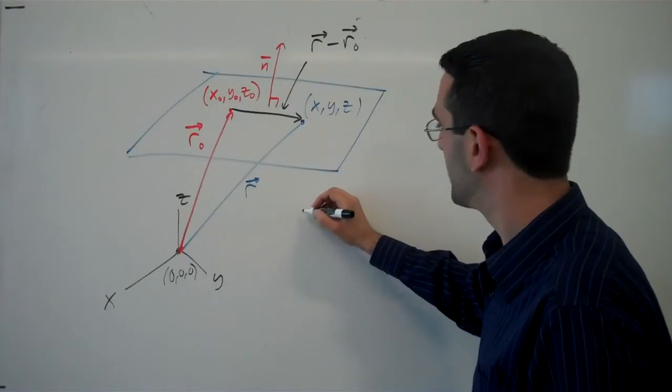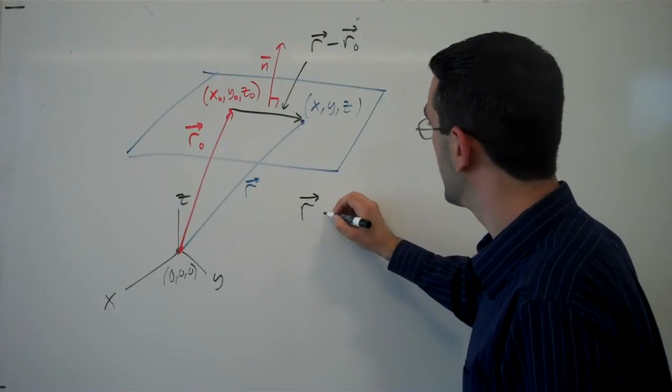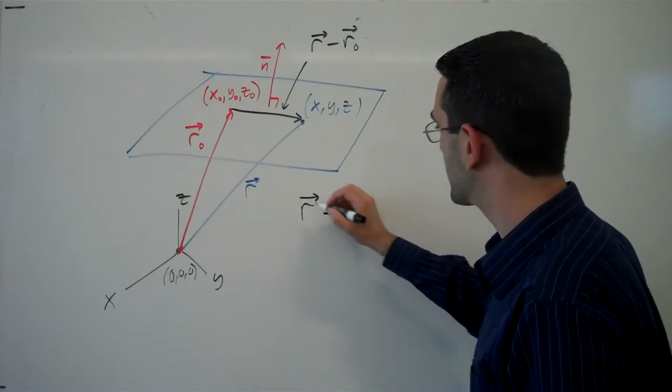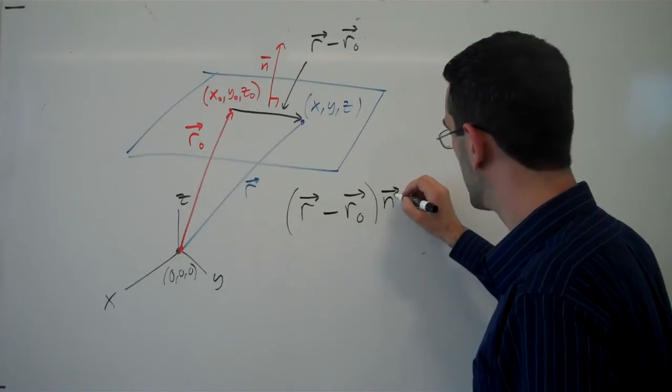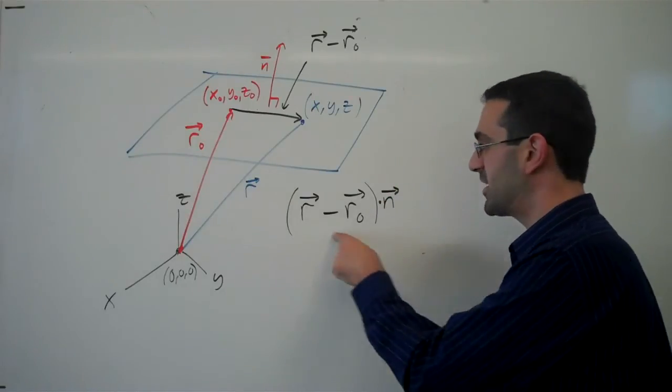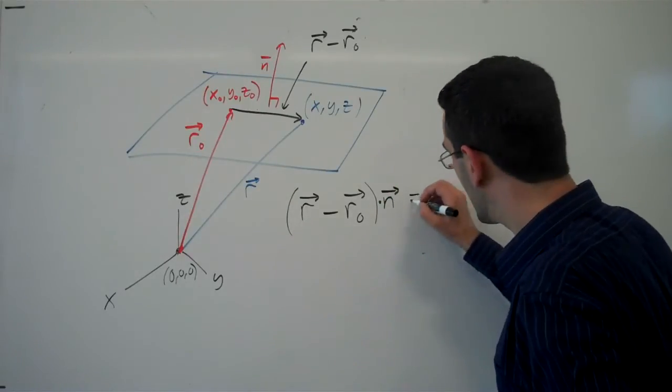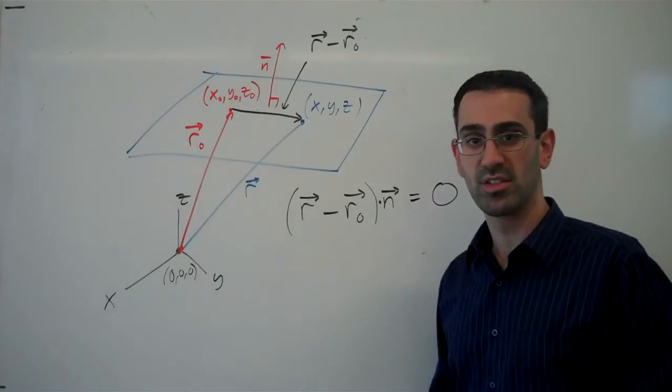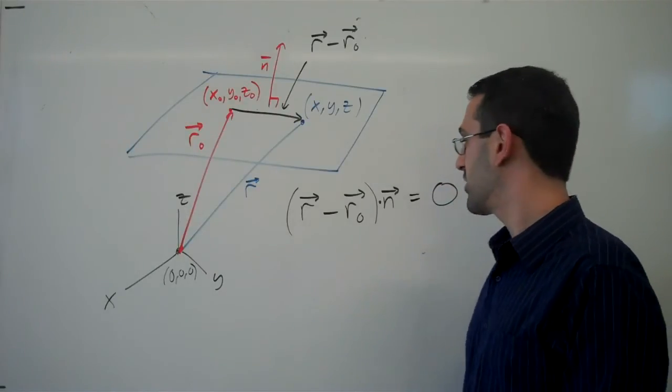Which means, if we remember from our dot product, that the dot product of r minus r_not and n is going to have to be zero, because those vectors are going to be orthogonal.